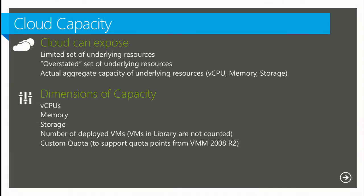The cloud is nothing more than an abstraction of compute, networking, and storage to make it easy to consume. Capacity is described in five dimensions: CPUs, memory, storage, number of VMs, and custom quota — though custom quota is there mainly for legacy purposes. There's a fairly sophisticated mapping: you can expose capacity to individual users, groups of users, or tenants. Everything is anchored to what capacity someone has access to, which is dictated by who they are and their membership in user roles in VMM.